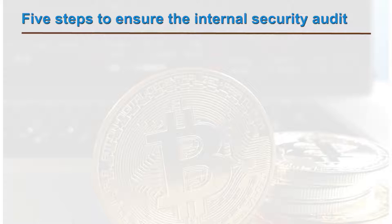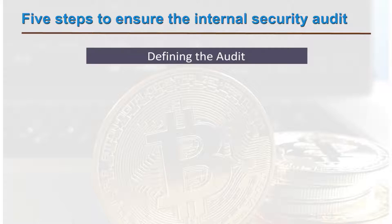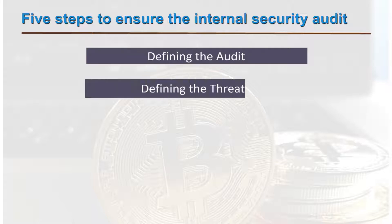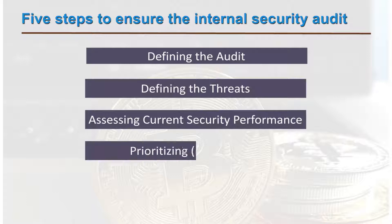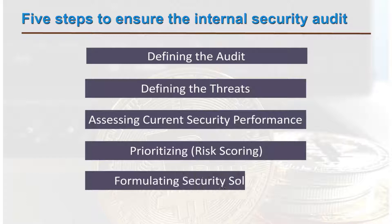There are five steps involved to ensure an internal security audit: defining the audit, defining the threats, assessing current security performance, prioritizing — also known as risk scoring — and finally formulating security solutions. We will see each one of these steps.